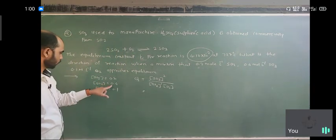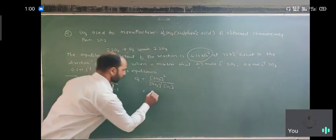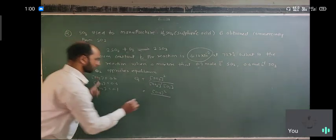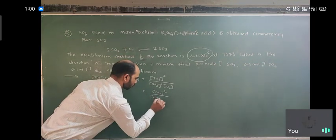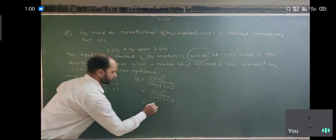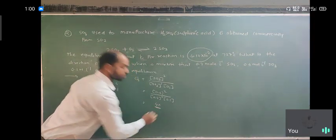What is SO3? SO3 is 0.4. So here is 0.4 squared upon, what is SO2? Here is 0.2 squared into 0.1. When we solve it, the answer is 40. Answer is 40.